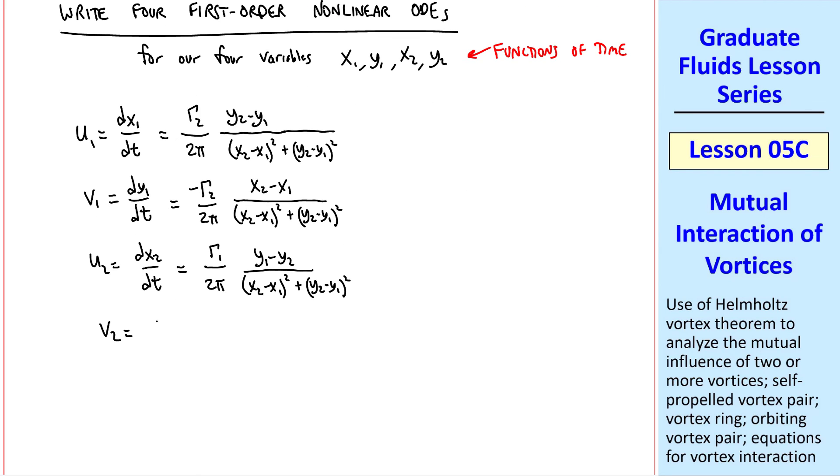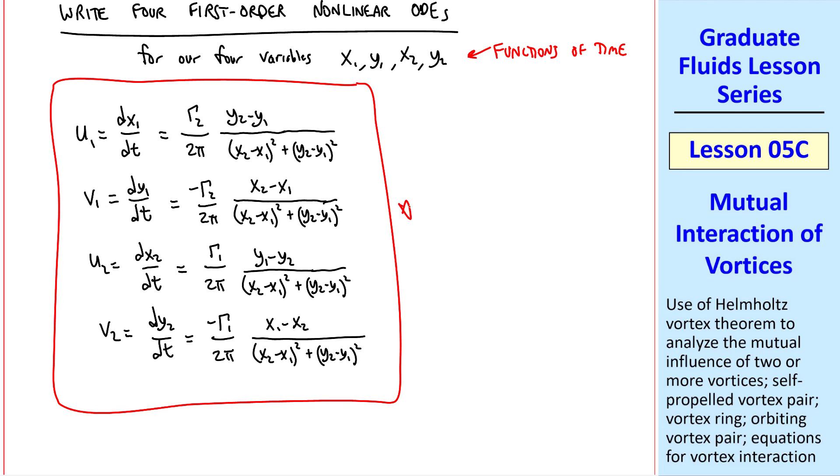And finally, v_2 is dy_2/dt, which is negative gamma_1 over 2 pi, x_1 minus x_2, over r squared. Thus we have four first-order nonlinear ODEs for x_1, y_1, x_2, and y_2 in terms of each other and the constant gammas.